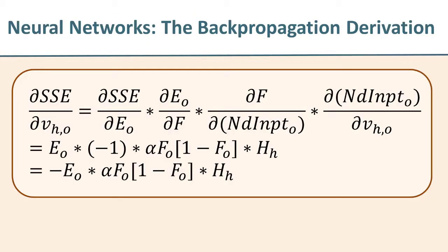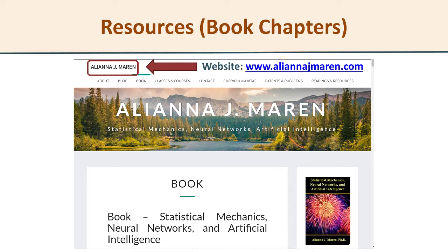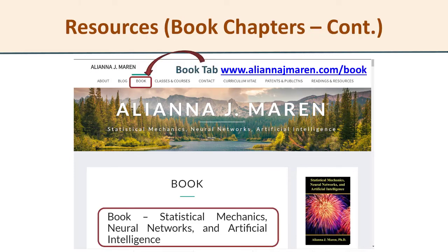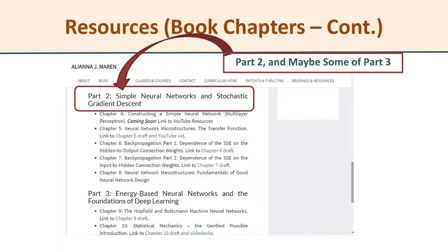Even though our goal across this series is to actually derive the equations for the backpropagation method, in this particular video we're going to focus just on setting up the word problem — that is, we're looking for an origin story. The book that I'm writing, though very much in progress, is available in various parts on my website. If you'd like the chapters that go along with these video tutorials, please go to alianajmorin.com, click on the book tab, scroll down, find the orange box, and that will have a link to the table of contents. Most of what we need is in part two.